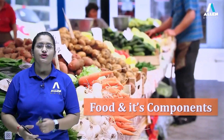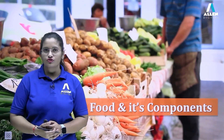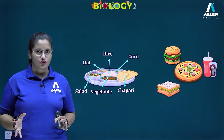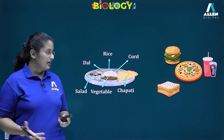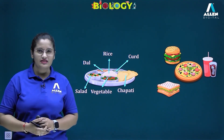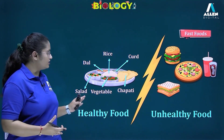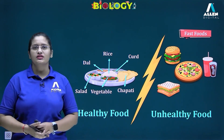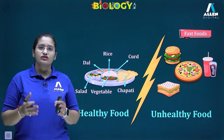Hello students, in this section we are going to talk about the introductory part of the chapter 'Food and its Components'. Here you can see two kinds of food items — one served to us by our mothers at home, and on the other side delicious items like pizza and burger. Why are some food items referred to as healthy food and some as unhealthy food?